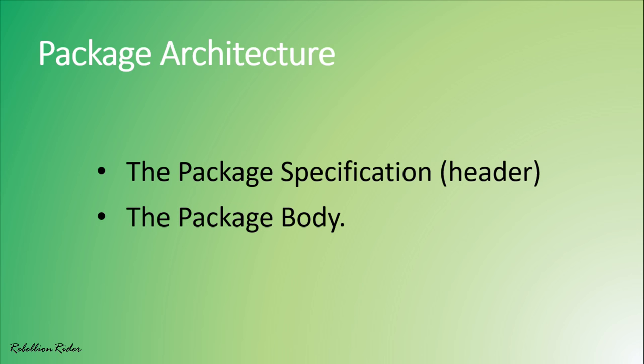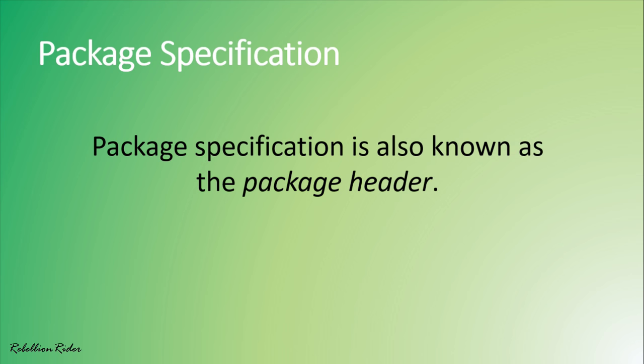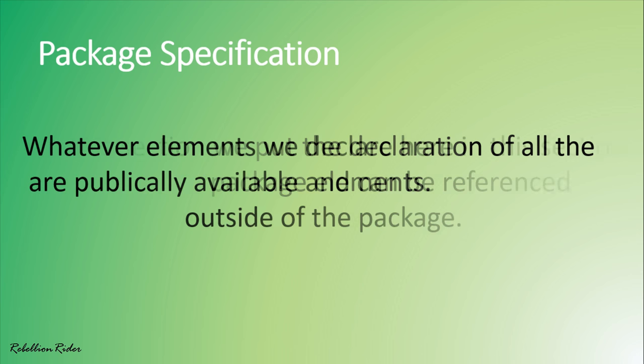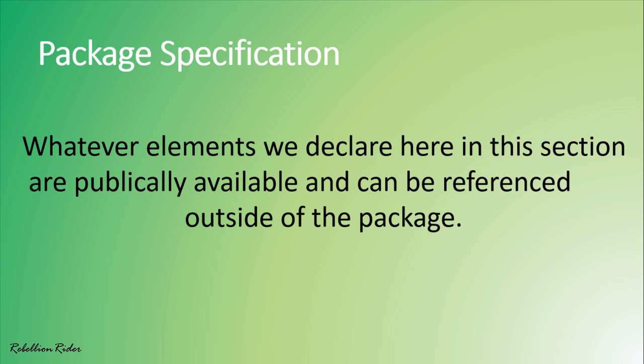Both these parts are stored separately in the data dictionary. The package specification is the required part whereas the package body is optional, but it is a good practice to provide the body to the package. Package specification, also known as the package header, is the section where we put the declaration of all the package elements. Whatever elements we declare here in this section are publicly available and can be referenced outside of the package. Always remember, in this section we only declare package elements but we don't define them. Also, this is the mandatory section of the package. A well and neatly designed package specification is sufficient to give a detailed knowledge of the package to the developer without even looking at the package body.